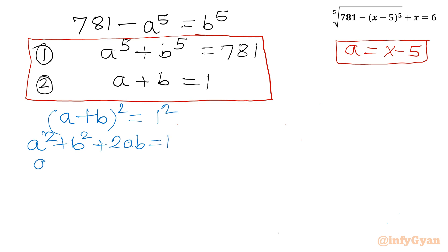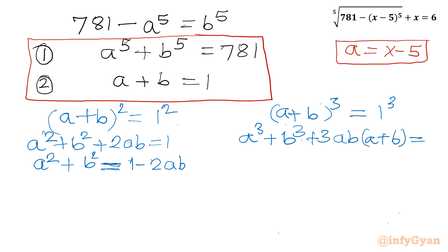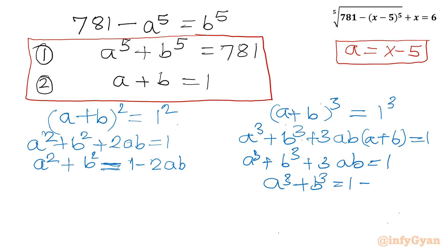Expanding: A squared plus B squared plus 2AB equals 1, so A squared plus B squared equals 1 minus 2AB. Now I will consider cubing the same equation: (A plus B)^3 equals 1^3. Using the cube formula: A^3 plus B^3 plus 3AB(A plus B) equals 1. Since A plus B equals 1, we get A^3 plus B^3 equals 1 minus 3AB.